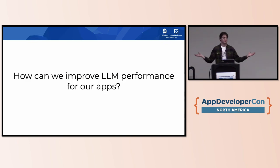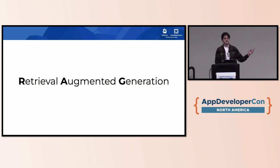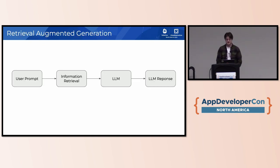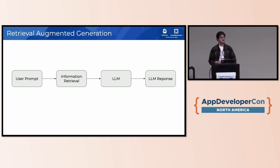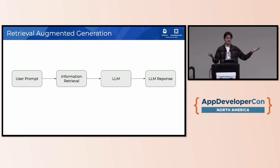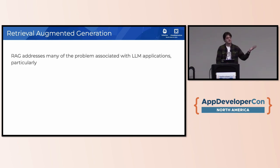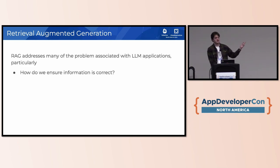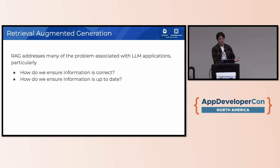One of the first solutions is retrieval augmented generation — RAG. The idea is the user gives some prompt to the system, there's an information retrieval system that adds information into that prompt, and all of that is given to the language model so it can respond with extra information to make the response more accurate. This solves a lot of the first two problems: the information retrieval gives correct information, and if it can retrieve recent information, it'll be up to date as well.